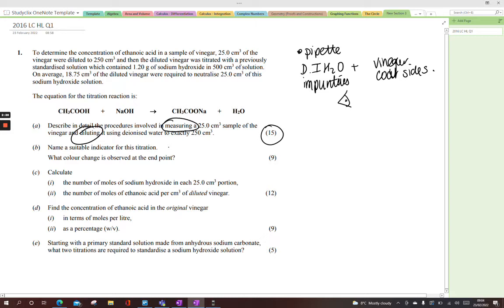A suitable indicator for this one. Since it's a weak acid and a strong base, we're using phenolphthalein. And the color change here, it's pink. It's a lovely pink color to colorless. Pink to colorless. Now we're into the calculation.